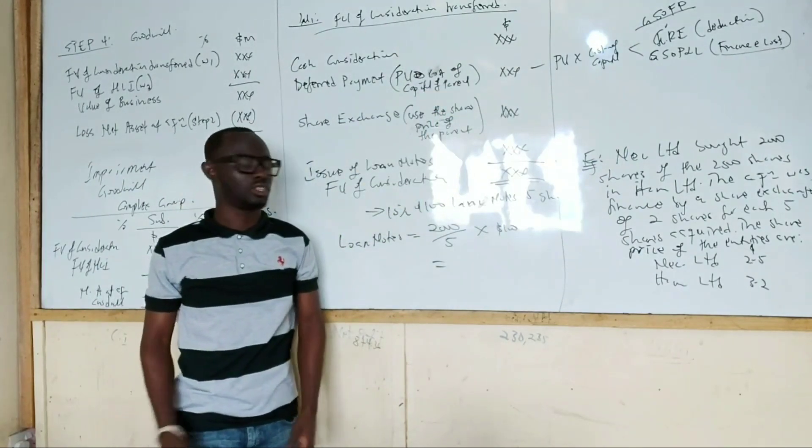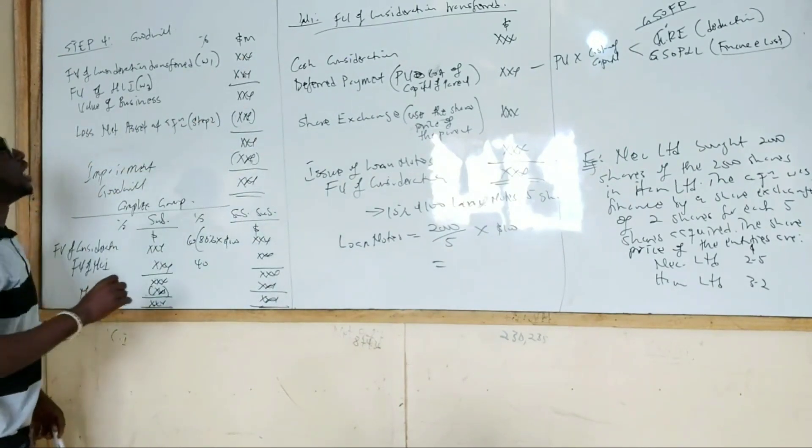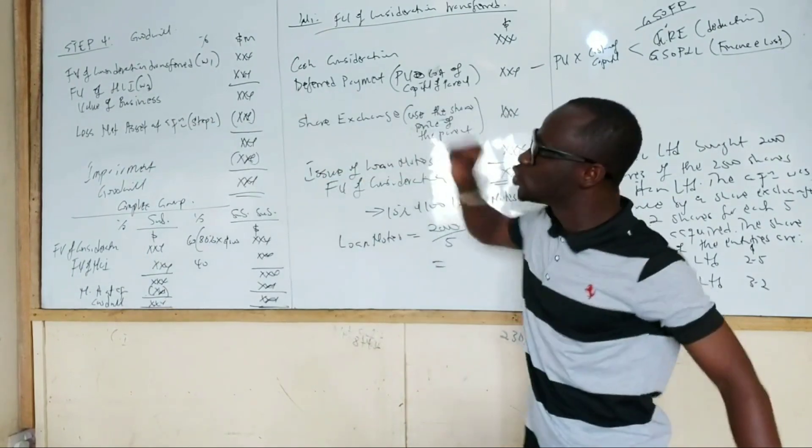That's very important to note today. So that is workings one: Fair value of consideration transfer. Let's go to workings two: NCI.